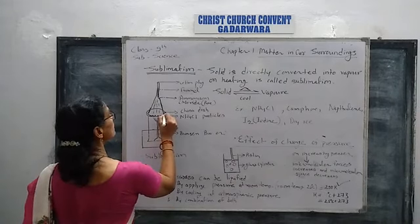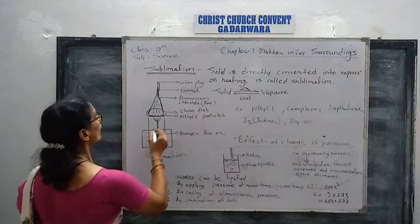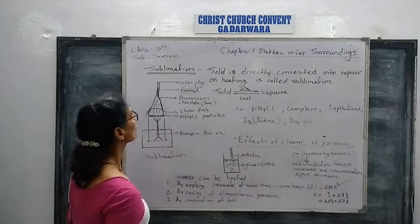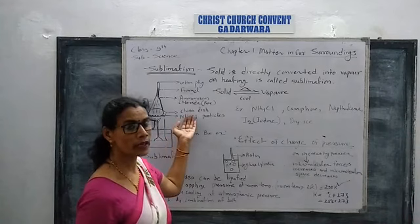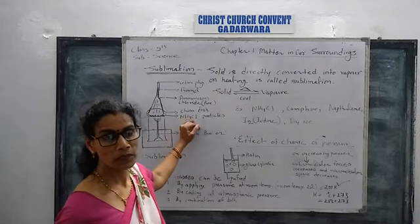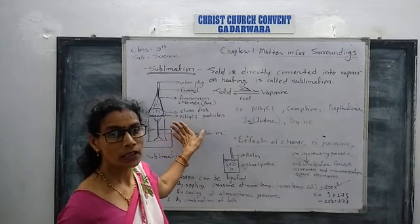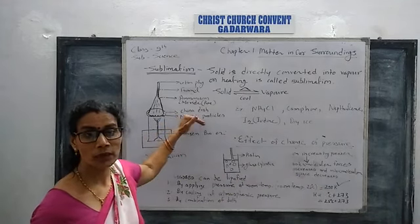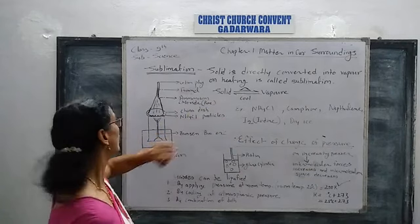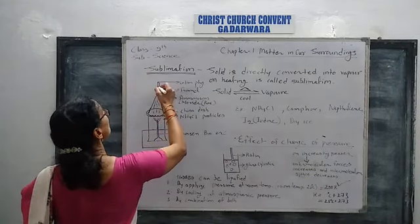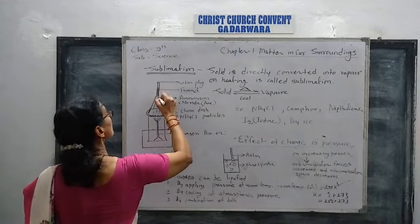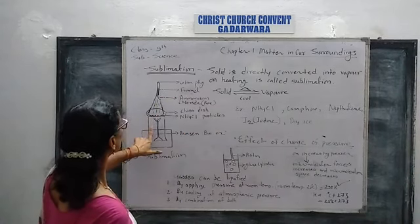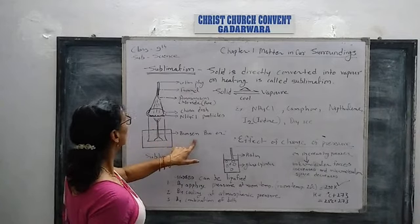We take one China disc, which is used in the laboratory. In the China disc, we take ammonium chloride particles. Ammonium chloride is a chemical and it is a sublime chemical — it is directly changed from solid state to gaseous state. We keep an inverted funnel on the China disc and give heat by the Bunsen burner.